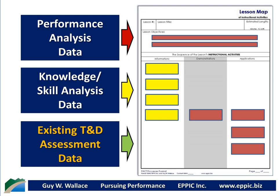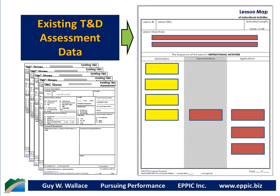Thirdly, we look at the existing training and development assessment data for reuse potential. We might determine that we have content identified in our existing training and development assessment forms that feeds some of the information requirements. Content that's fully covered can be lifted and placed from a previous training and development set into this new design. We may also have content elsewhere that is partially what we needed for a demonstration and an application. The intent is to salvage the existing content investments by the shareholders and reuse them either as-is or after modification.